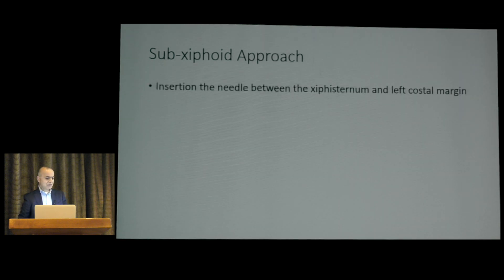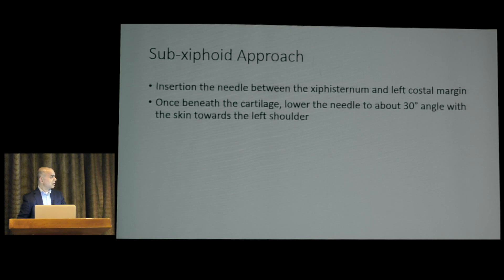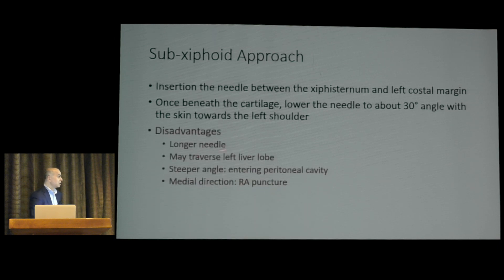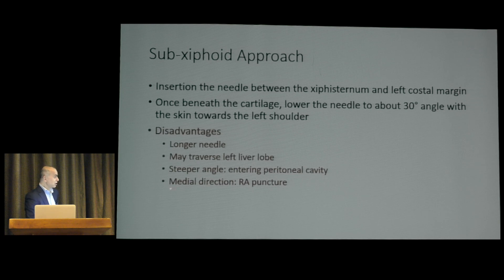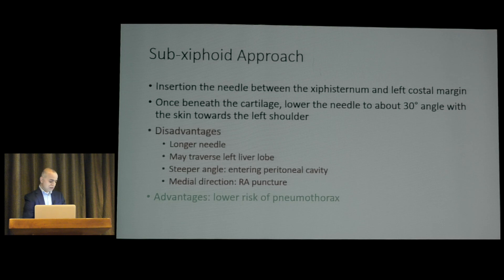For the sub-xiphoid approach, the needle is inserted between the sub-xiphoid process and left costal margin. Once beneath the cartilage, lower the needle to about 30 degrees from the skin toward the shoulder. Major disadvantages include needing a longer needle (sometimes a spinal needle), risk of traversing the left liver lobe, risk of entering the peritoneal cavity, and the possibility of right atrial puncture with medial direction. The main advantage is the lowest risk of pneumothorax.